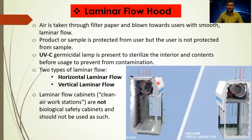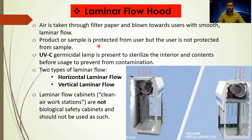Laminar flow hood — as the name suggests — means a smooth, unidirectional flow of air. Air is taken through the filter paper and blown towards the user smoothly. The product or sample is protected, but the user and the environment are not protected — this is its biggest drawback. It also contains ultraviolet light of category C, which helps germicides easily sterilize the interior. Before using the laminar flow hood, the UV light is switched on for 15 minutes to remove internal contaminants.